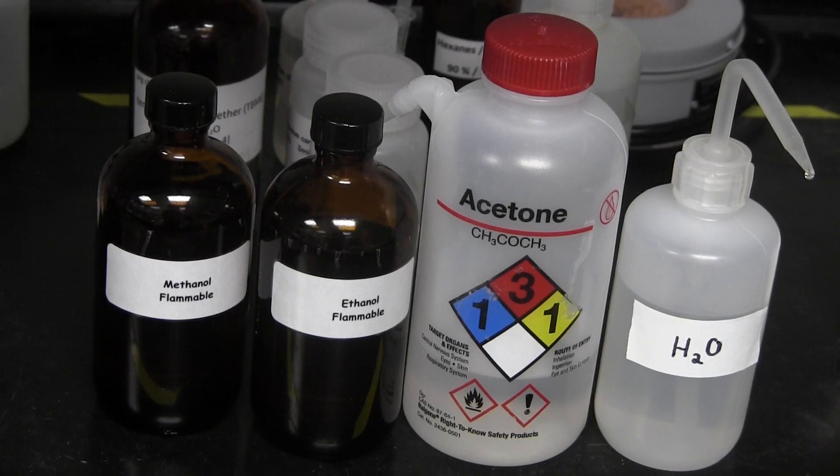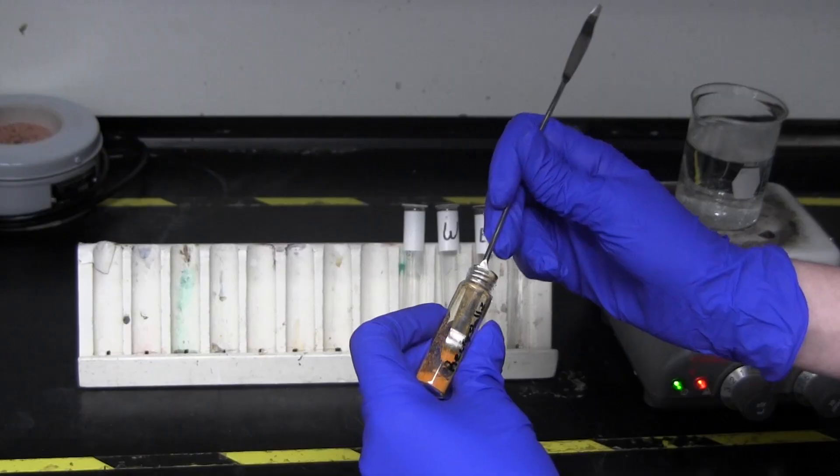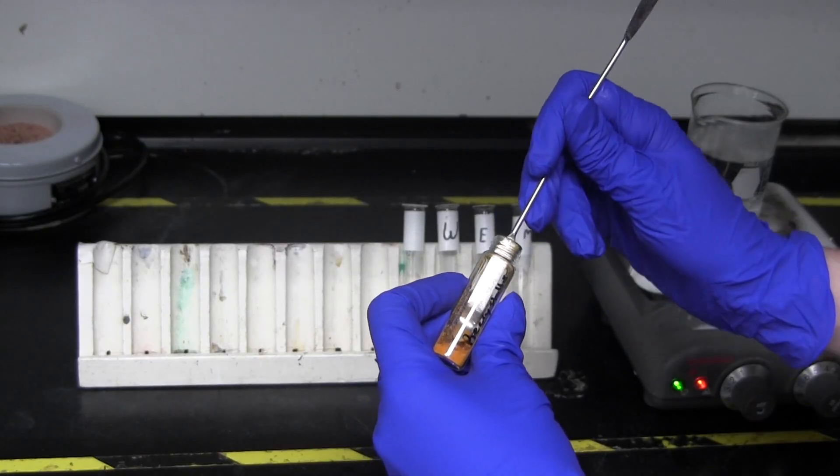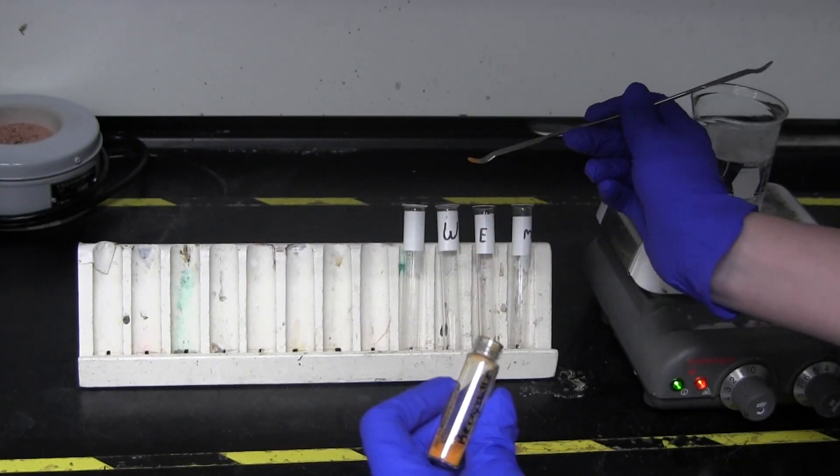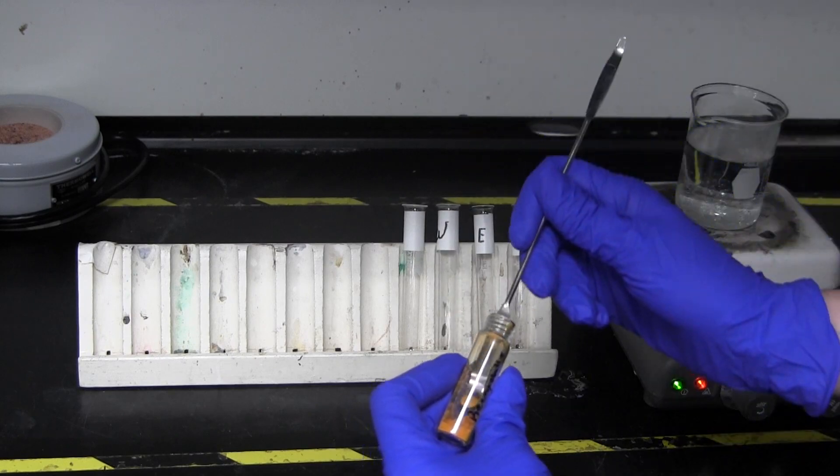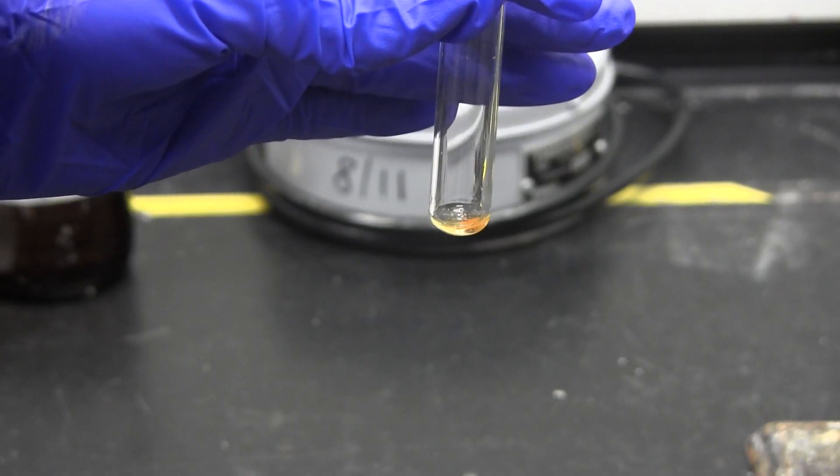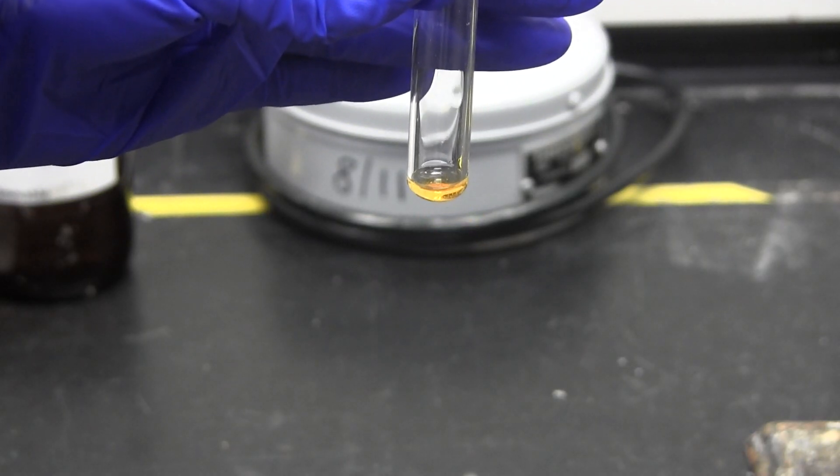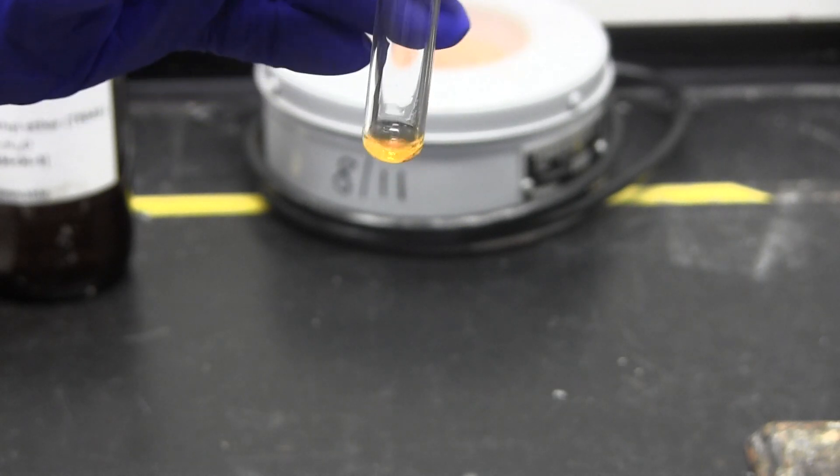First, you will have to determine the solvent that your unknown will work in. At room temperature, the unknown should dissolve partially or not at all. When heated, the unknown should fully dissolve into the same solvent. Test each of the four solvents to determine the best one. It is possible that more than one of them will work.